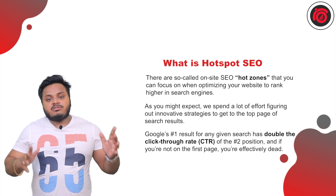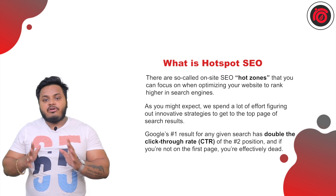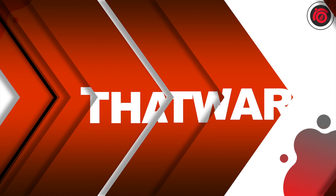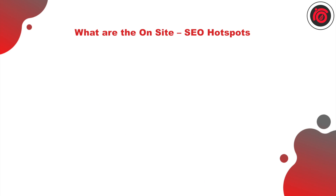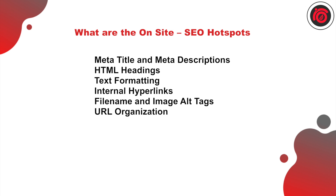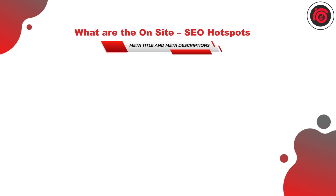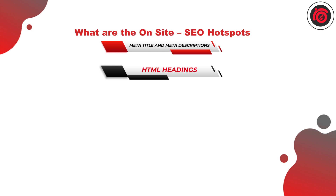Those changes can really make a significant improvement on your particular campaign without involving a wide range of parameters. Some of the areas where hotspot SEO optimizations can take place — as you can see on the screen, there are a lot of different areas. The very basic is the meta title and meta descriptions; you can improve or make changes to your metadata, which can improve your call-to-actions and also your click-through rate.